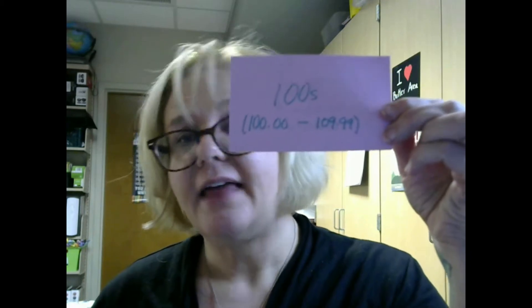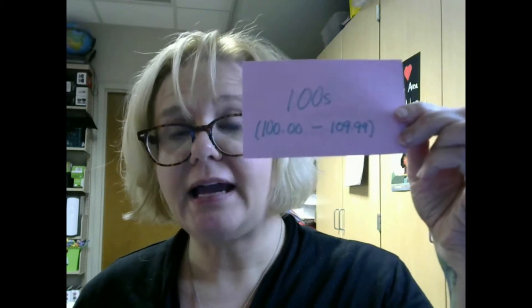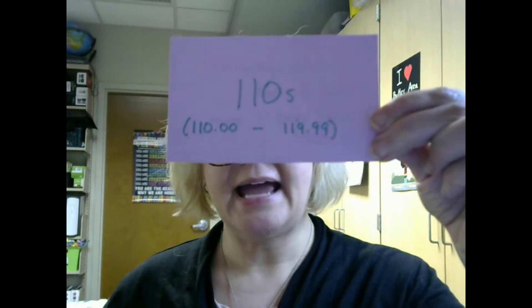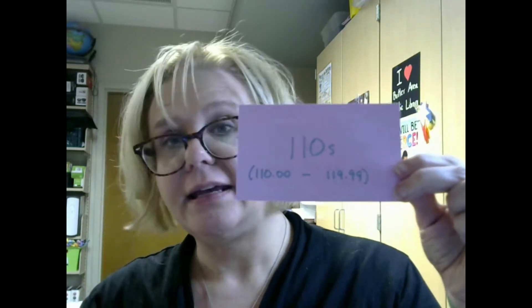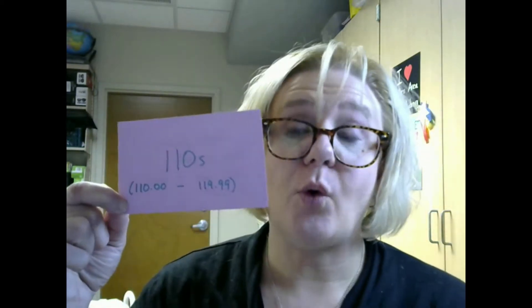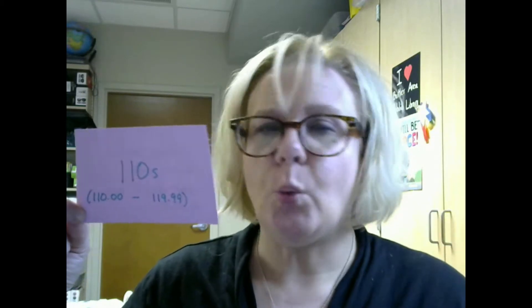First of all, we start with the 100s — that's 100.00 to 109.99 — and this is going to be general works about psychology or philosophy. It's just a general beginning catch-all category. Then we move on to the 110s, that's 110.00 to 119.99. This section is reserved for metaphysics. Metaphysics is the study or discussion of what is real, what is not real, and what does it mean to exist. These are very abstract, esoteric ideas.